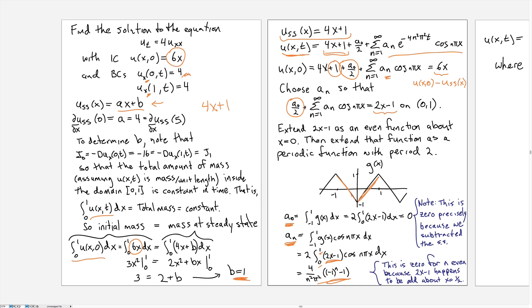And the other comment here on the side is that the a_n are 0 for n even, again as we had in the previous example, because the function 2x - 1 happens to be odd about the midpoint of the domain 0 to 1.